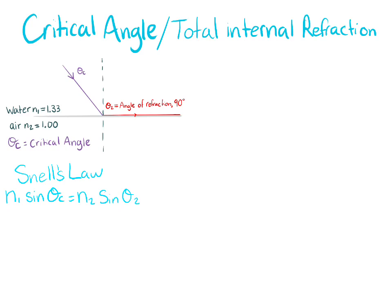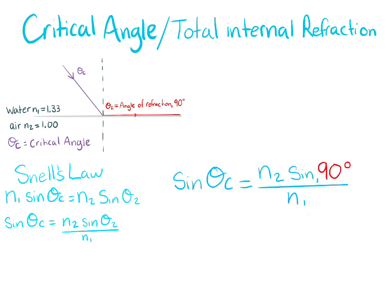To calculate the critical angle, we are going to use Snell's law. We isolate sin theta c, then plug in all the known angles. So, for this one, we can plug in sin theta 2, which is the angle of refraction, which is 90 degrees.